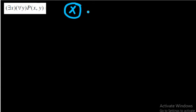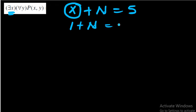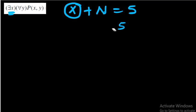The second combination is 'there exists x, for all y': there is a fixed number x that, when added to every natural number y, always gives five. Can you find one natural number x that works for every y? No. For example, if you fix x=1, then 1 plus every natural number does not always give five. The only value that could work with a specific y is 4, but it won't work for every natural number. So this proposition is false.